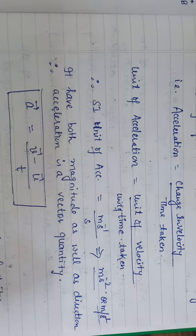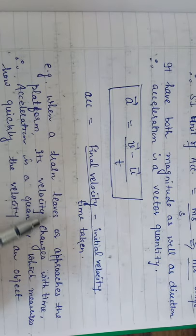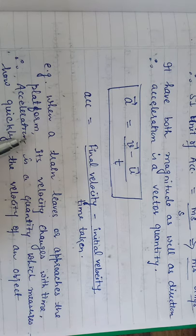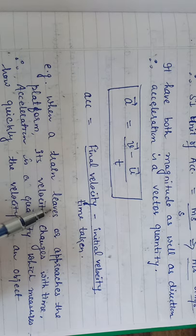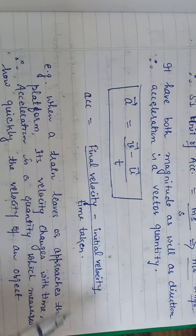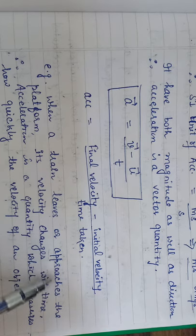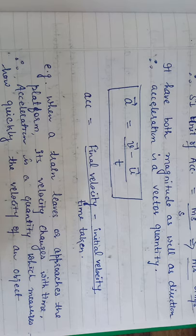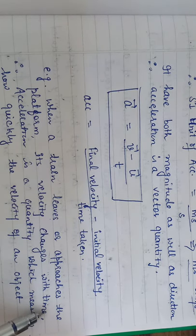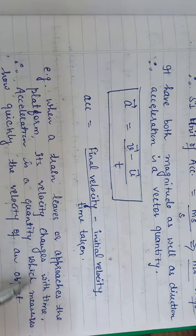The formula for acceleration is a = (V - U) / T, that is final velocity minus initial velocity upon time taken. For example, when a train leaves or approaches the platform, its velocity changes with time. If the train leaves the station, its initial velocity is less than its final velocity because its velocity goes on increasing gradually. When it approaches the platform, its velocity goes on decreasing.